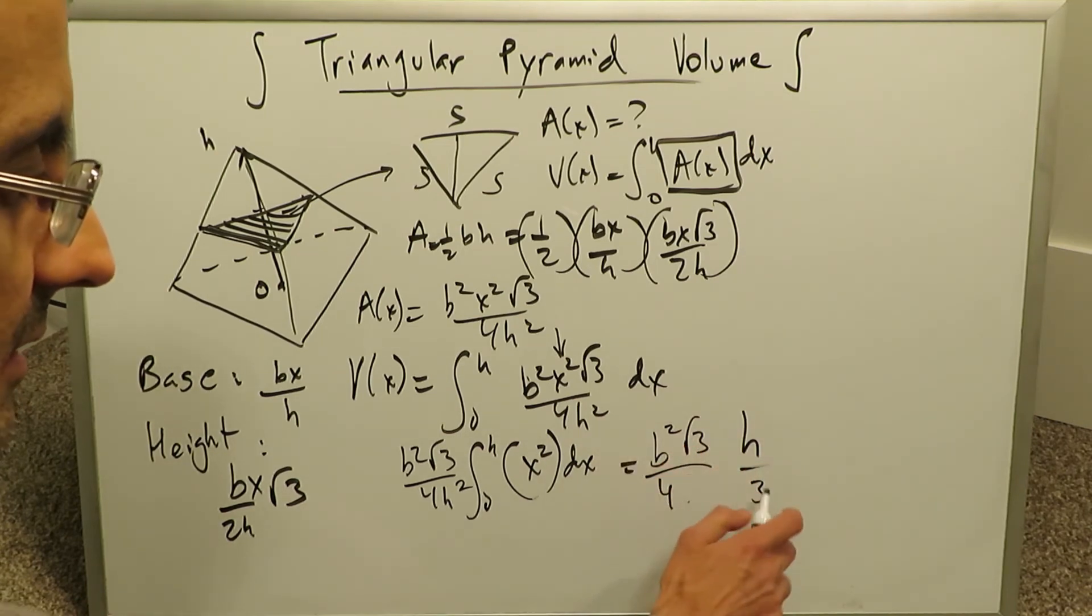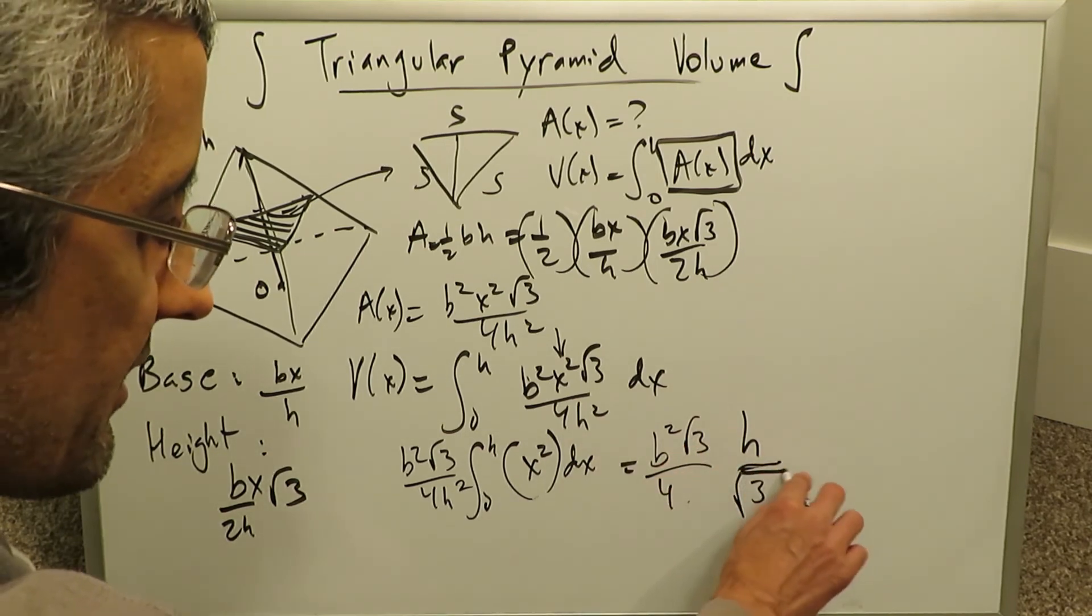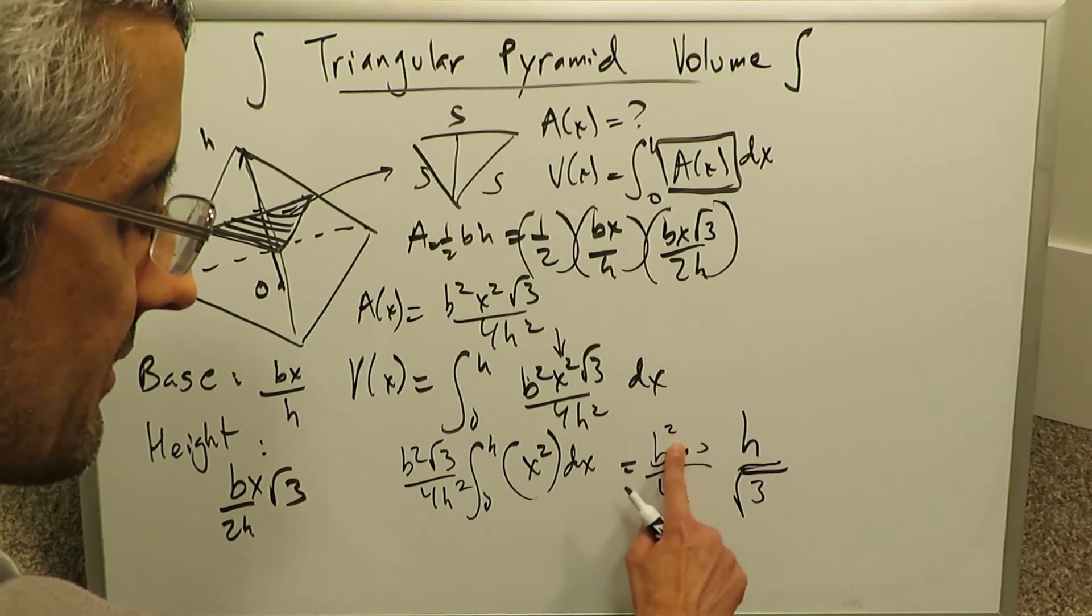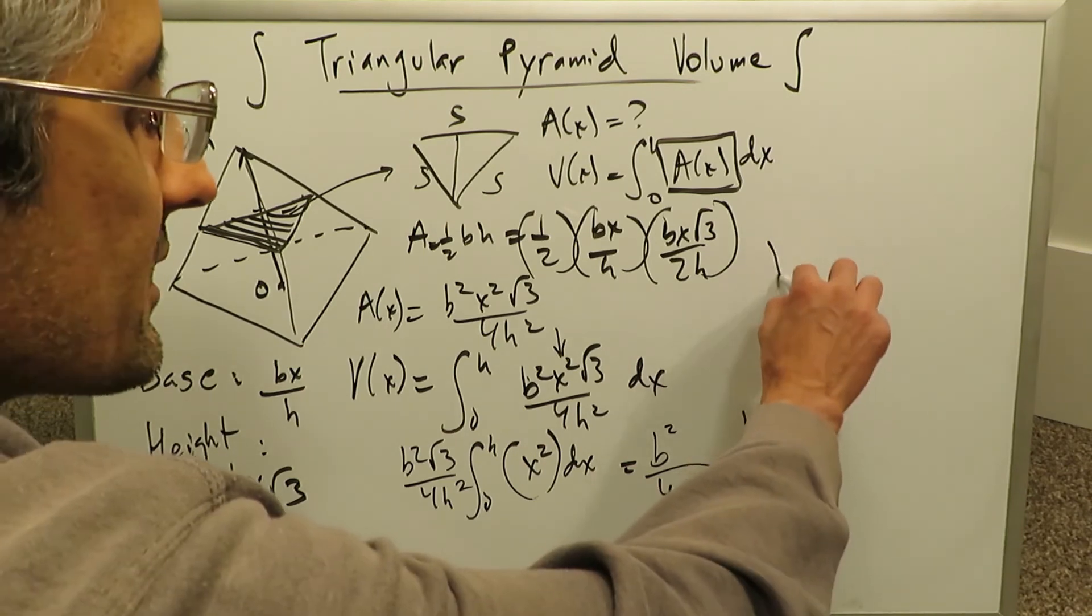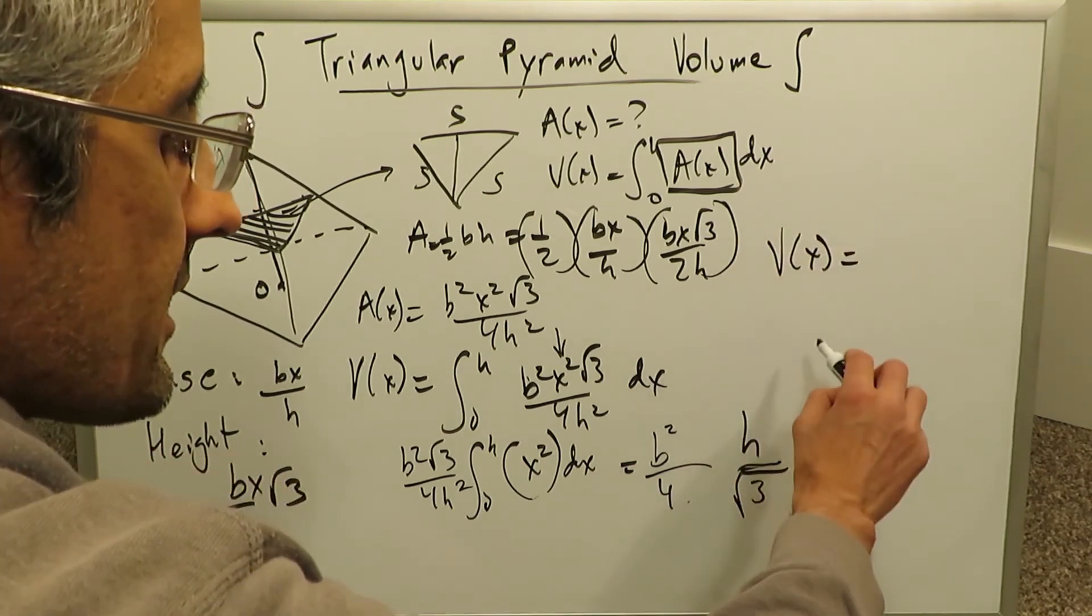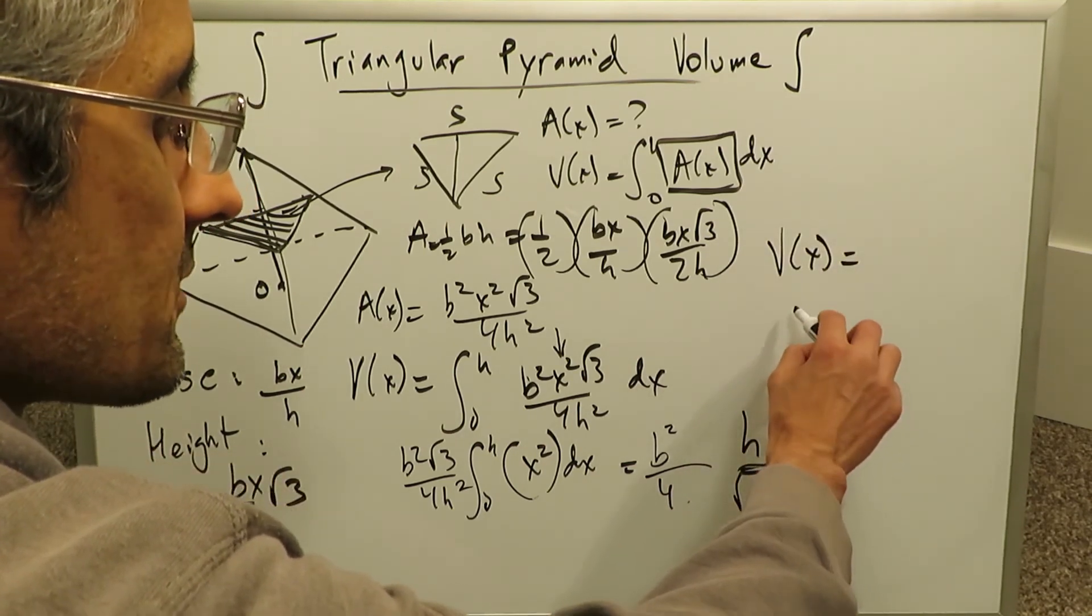This H squared cancels out with that H cubed, so you only have an H left here in the numerator. This root 3 cancels out with this denominator of 3 and it brings a root over here and you can erase this. So what do we end up really getting is our volume. The volume of this triangular pyramid would therefore be this value right over here.